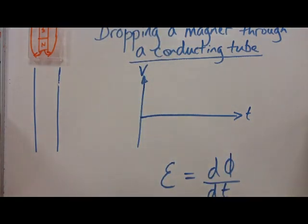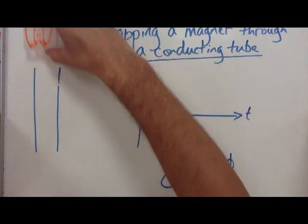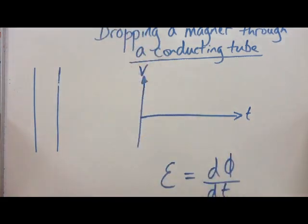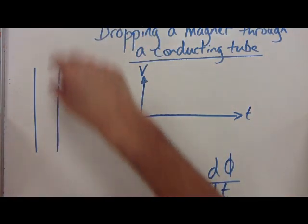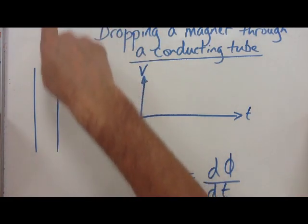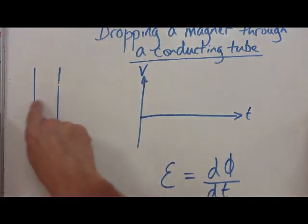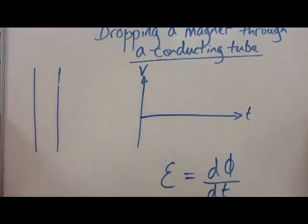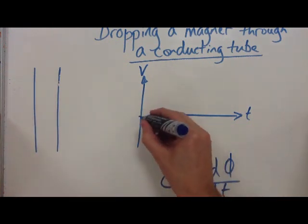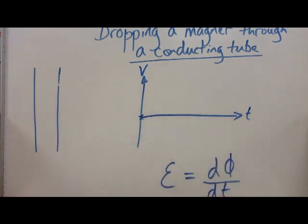Initially, before we drop this, let's imagine it's just a very, very long way away, and the field lines of the magnet are nowhere near this conducting tube. Therefore, we start at zero.